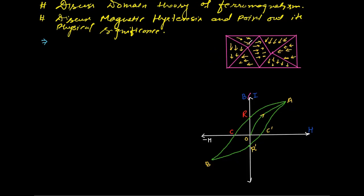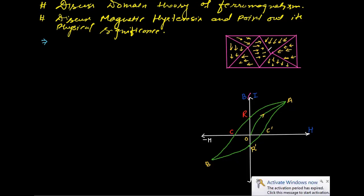In the absence of an external magnetizing field, this material has no net magnetic effect. This is known for iron, nickel, and alnico materials. The domains neutralize each other's magnetic effect, so the net magnetic effect is zero. This is the domain theory associated with ferromagnetism.